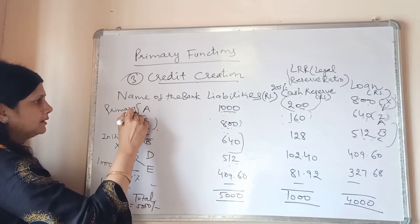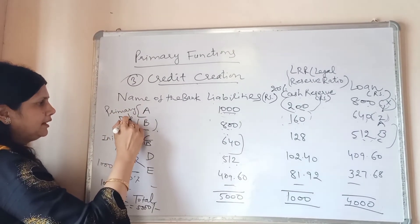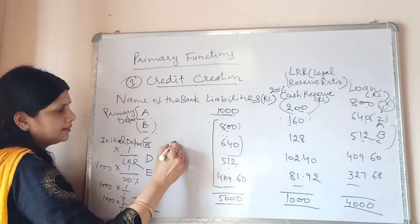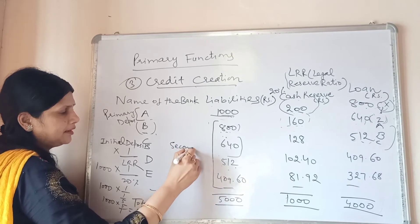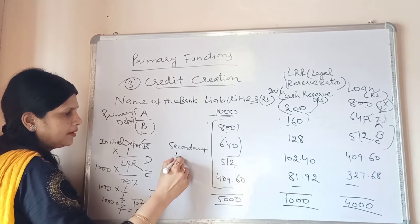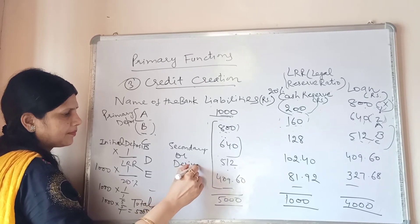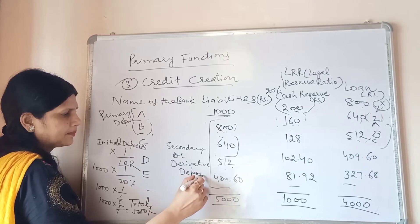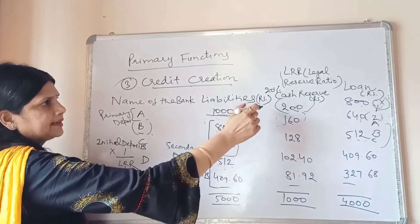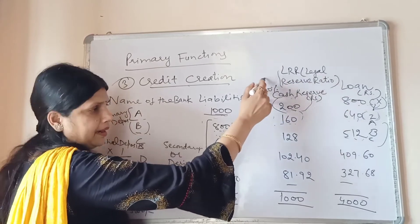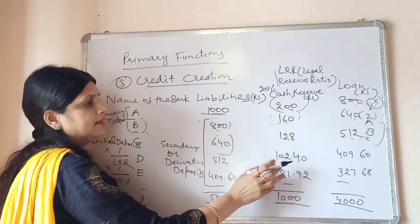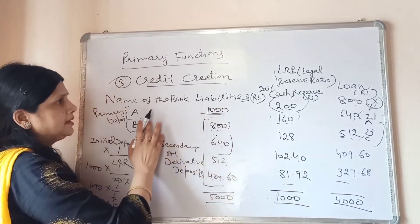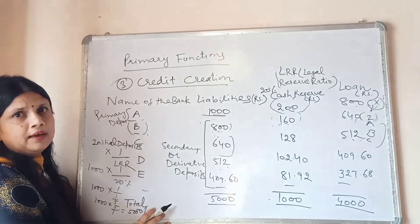The first deposit is known as the Primary Deposit, since it is the initial deposit made. All subsequent deposits are known as Secondary Deposits or Derivative Deposits. The SLR and LRR are decided by the bank on the basis of previous requirements.